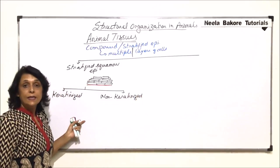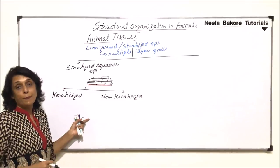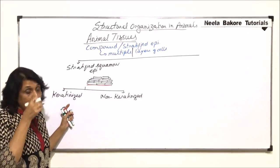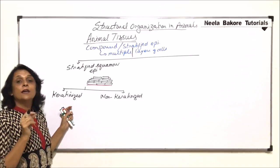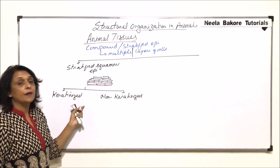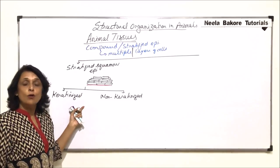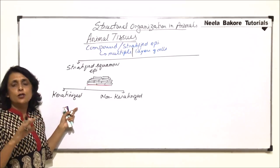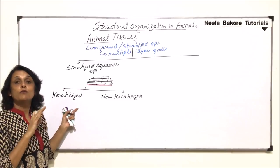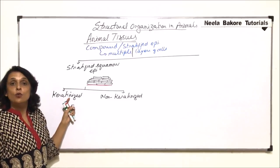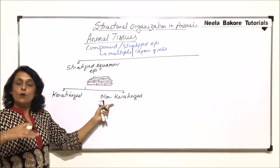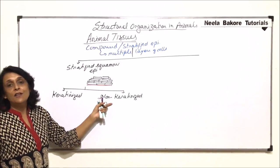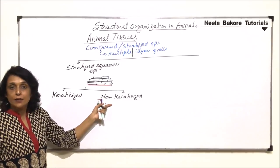Keratin is deposited normally in the upper layers. If keratin gets deposited, then the upper layers become a little hard, and because of keratin, the upper layers also die. So wherever there is friction or damage due to some kind of movement, this structure would help. And if you need only multiple layers just for protection, then even if keratin is not present, it will provide the protection.